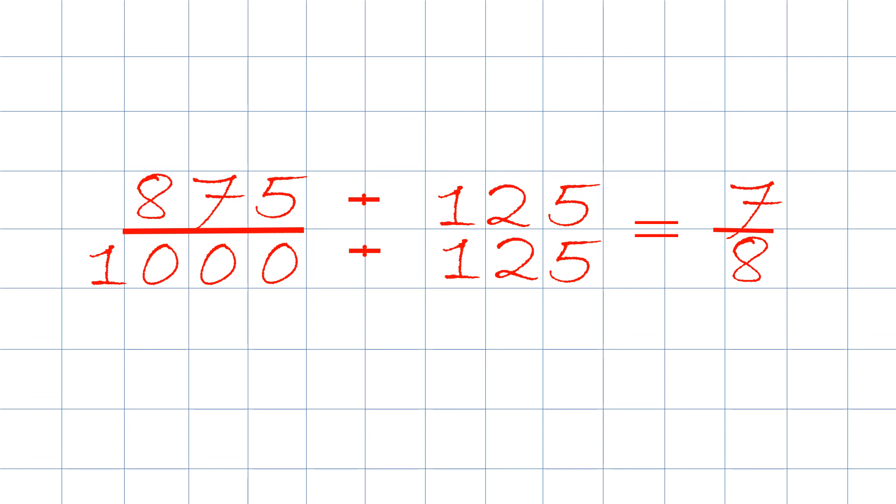7 eighths is the answer. Now, to double check, we take the top number, the 7, and we divide it by 8. And the answer will be 0.875. You could use your calculator or use long division, but the answer will be the same.